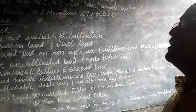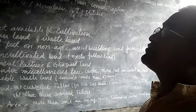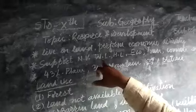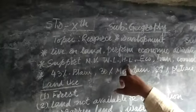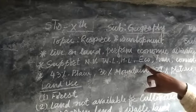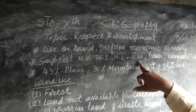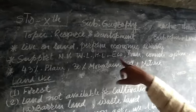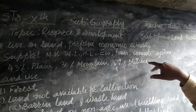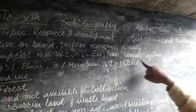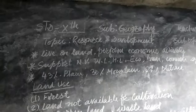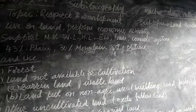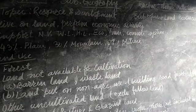Land resources are not only necessary for human habitation, but they also support natural vegetation, wildlife, human life, ecological balance, transportation, and communication systems. All of these systems are supported by land resources only, so land resources are very important.